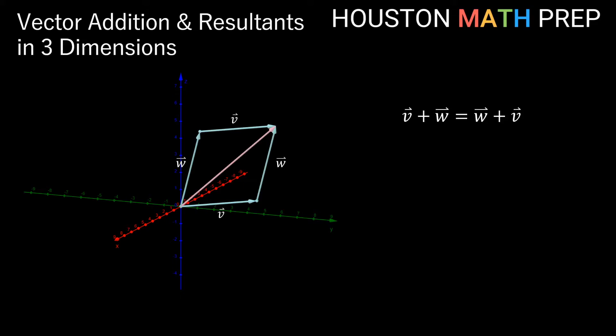So V plus W is going to be the same as W plus V in vector land. So similar to adding real numbers, when we add vectors, that operation of vector addition is commutative. That's not true for all operations that we do with vectors, that they behave the same as real numbers. But for the operation of vector addition, it does work that way.